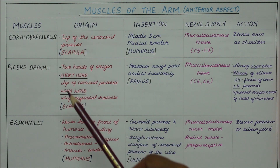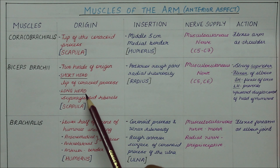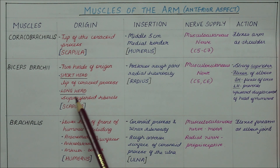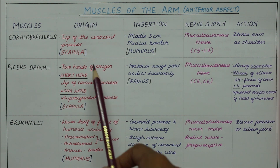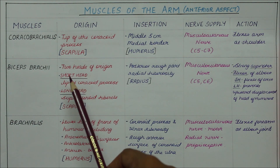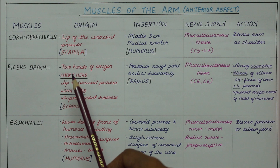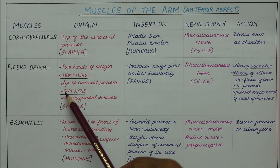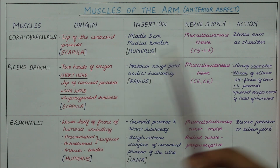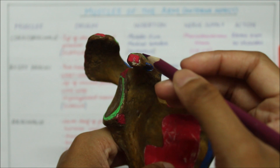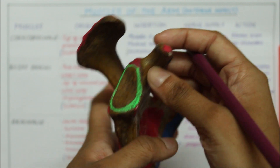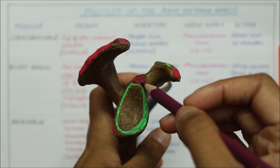Next let's move on to the biceps brachii. It originates from two heads — a short head and a long head. The short head originates from the tip of the coracoid process, while the long head originates from the supraglenoid tubercle of the scapula. Since the short head is small, it originates from the same place as the coracobrachialis, and the long head originates from the supraglenoid tubercle as you can see right here.